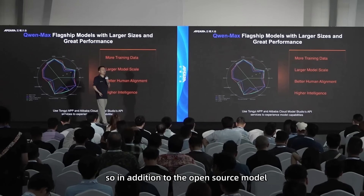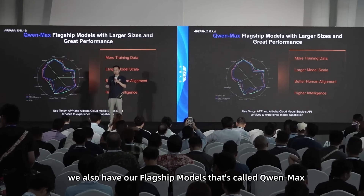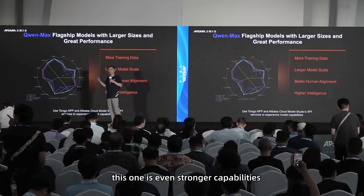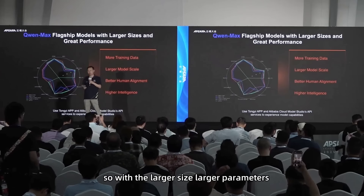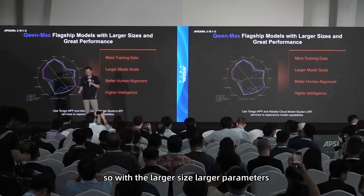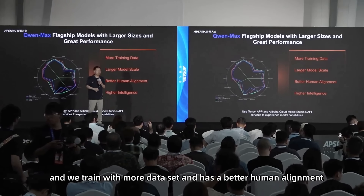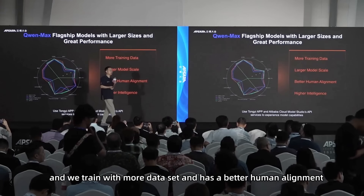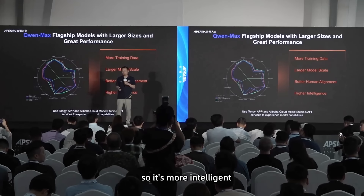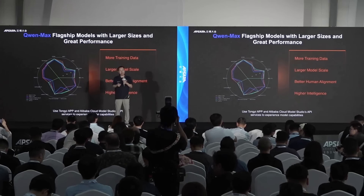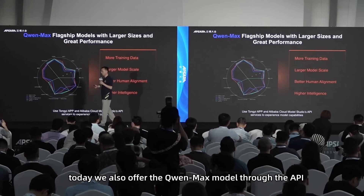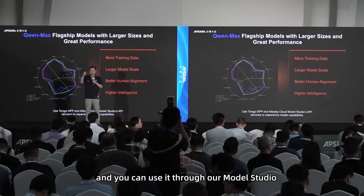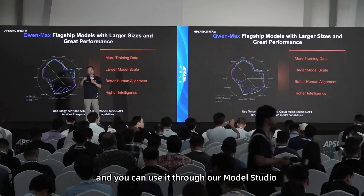In addition to the open-source model, we also have our flagship model called Qwen Max. This one has even stronger capabilities — larger size, more parameters, trained with more data, and better human alignment — making it more intelligent. Today, we also offer the Qwen Max model through the API, and you can use it through our Model Studio.